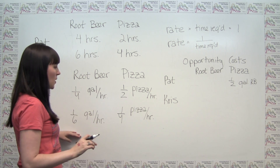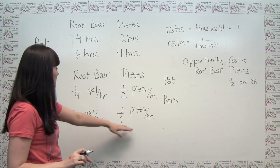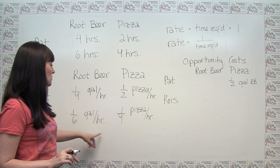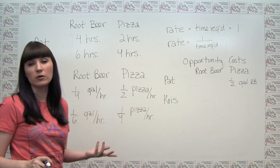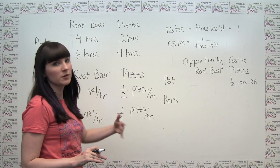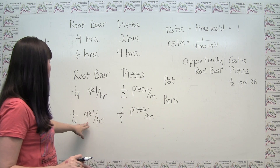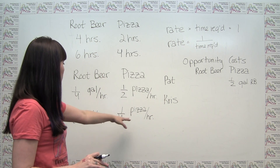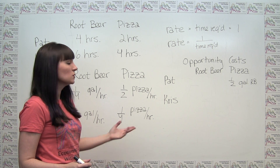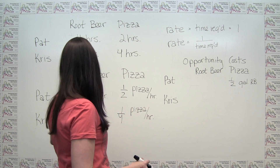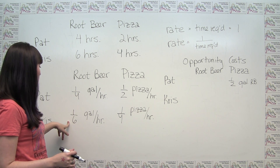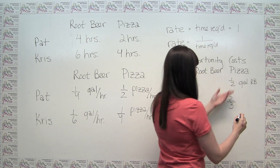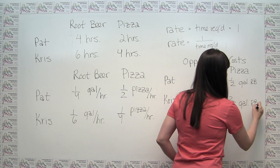We can also calculate Chris's opportunity cost of pizza. In one hour, Chris can make one-fourth of a pizza or one-sixth of a gallon of root beer. One pizza is four-quarters of a pizza, so the opportunity cost of one pizza is four times one-sixth, which is four-sixths, or two-thirds. So Chris's opportunity cost of pizza is two-thirds of a gallon of root beer.